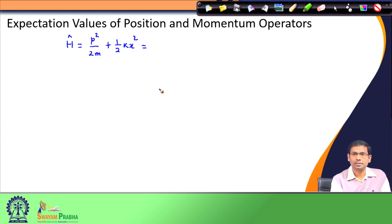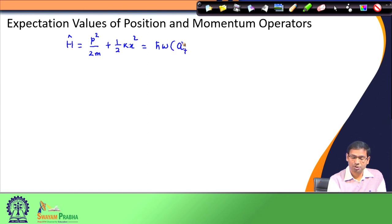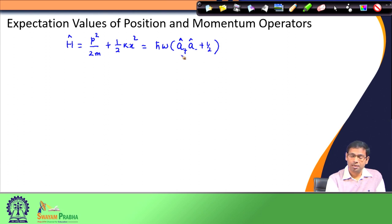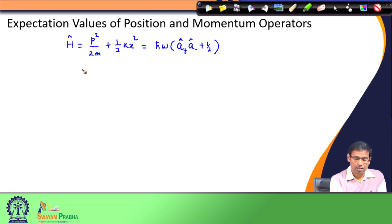While discussing the solution of this Hamiltonian, instead of solving this problem in terms of position and momentum operators, we expressed this Hamiltonian in terms of a creation and annihilation operator. Here a-plus and a-minus are two new operators defined in terms of p, the momentum operator, and x, the position operator. a-plus is called the creation or step-up operator, and a-minus is the annihilation or step-down operator. Using these two operators, we defined the eigenfunctions of the harmonic oscillator.